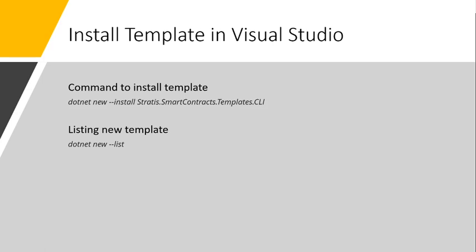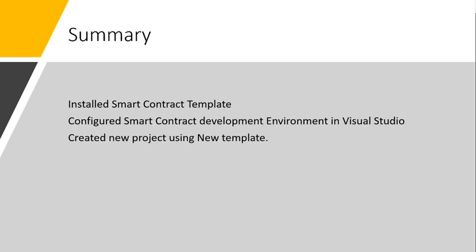We have installed the smart contract template in Visual Studio. We learned to install a new template in Visual Studio and set up the Stratis smart contract template. Now we are ready for smart contract development using our Stratis and .NET skillsets, and we can create a new project using the newly installed template — that we also learned in this video.